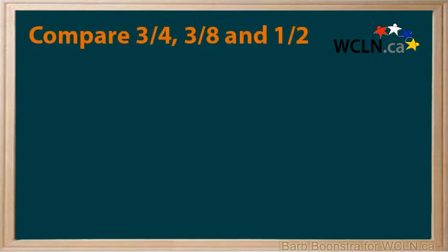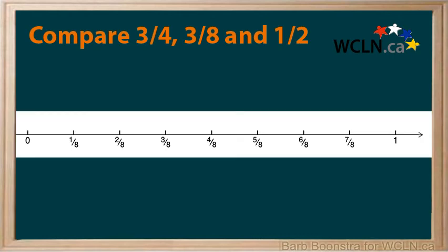To compare three quarters, three eighths, and one half, plot these on a number line divided into eighths, because eighths, quarters, and halves can be shown on the same line.